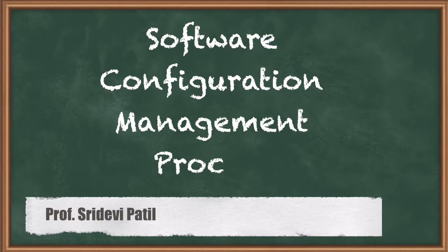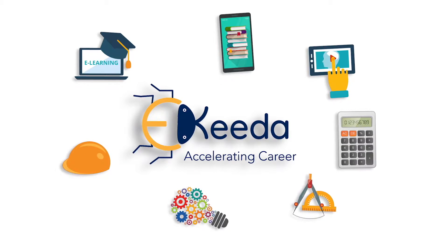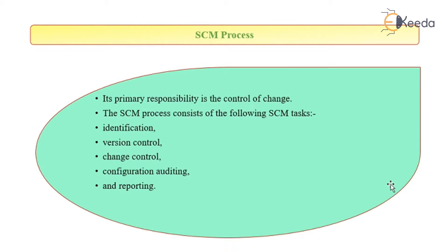Dear friends, today we are going to study about the SEM process. SEM is Software Configuration Process. This includes controlling of change. SEM also means software change management — that is how we review, create versions and incorporate the changes.